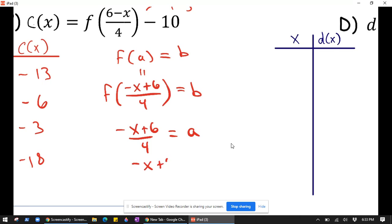Times by 4 gives us negative x plus 6 equals 4a. So therefore, negative x is equal to 4a minus 6, and then x equals the opposite of that.